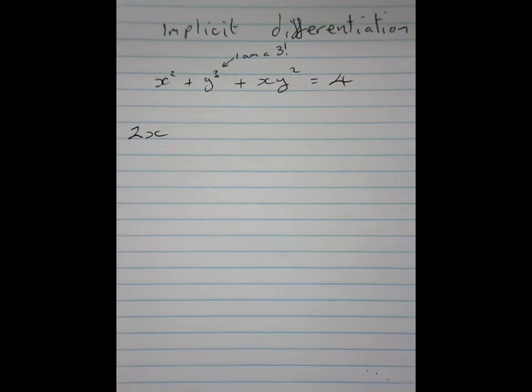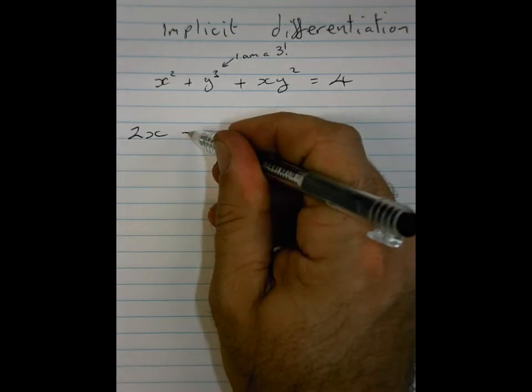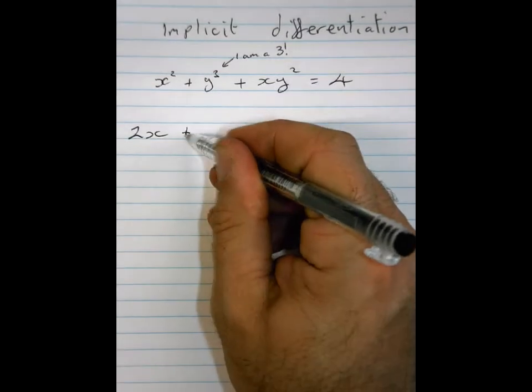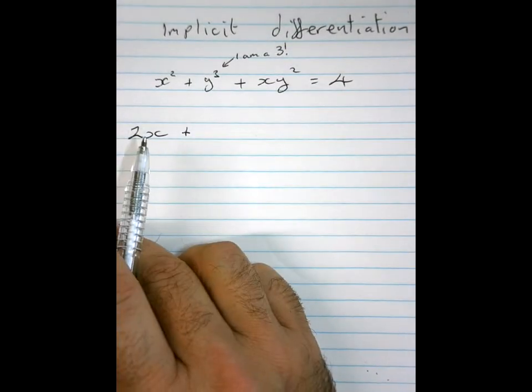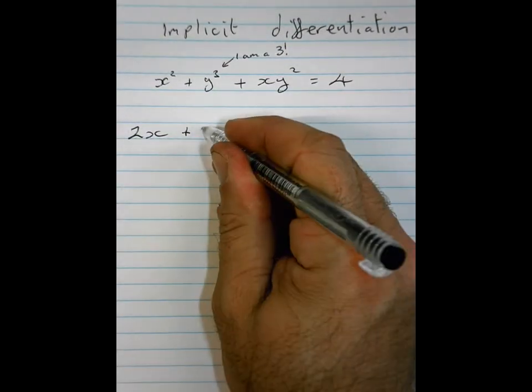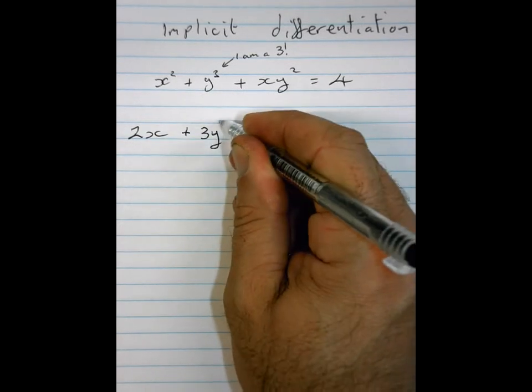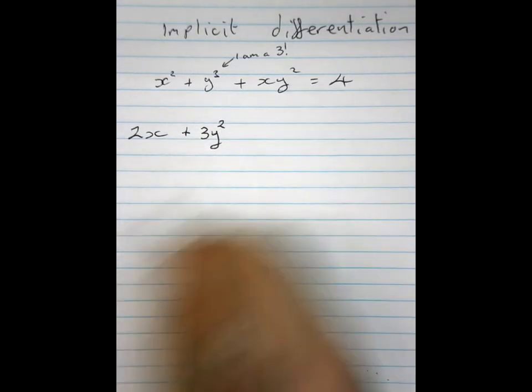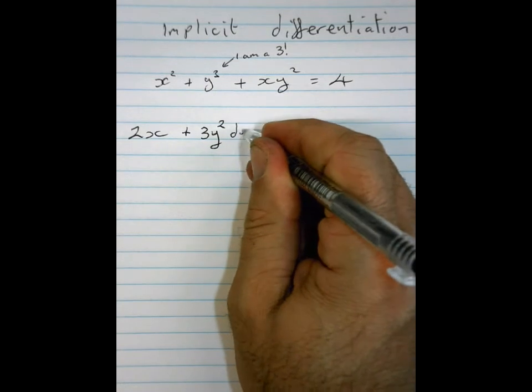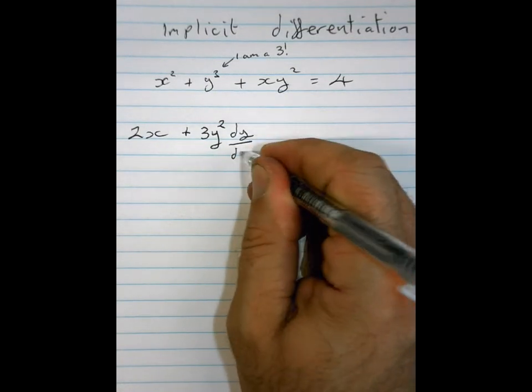Now, y cubed, how do you differentiate y cubed? 3y squared is a bit more though, because remember we're differentiating with respect to x. So we're going to write this. Just get used to this for a little while. Just trust me for a moment. So 3y squared. Nobody had a problem with that. And then we write dy by dx.